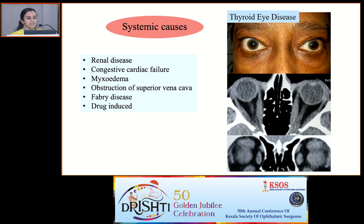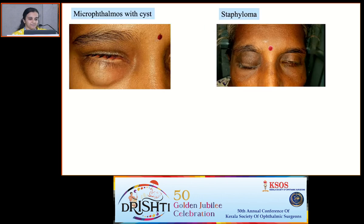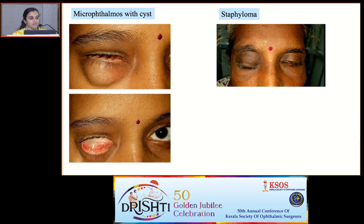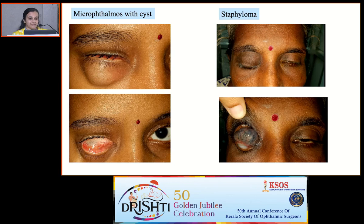Always ask about a history of increase in edema during morning hours, especially in the case of renal diseases. In a patient with a dysthyroid status, look for various lid signs of thyroid eye disease. Sometimes the underlying globe itself protrudes and presents as lid swelling, as in the case of microphthalmos with cysts or a case of staphyloma.